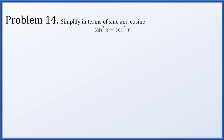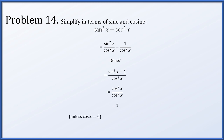In problem 14, we simplify tan²x − sec²x. Tangent is sin/cos and secant is 1/cos, so with a common denominator of cos², we get (sin²x − 1)/cos²x. By the Pythagorean identity, sin²x − 1 = −cos²x. We now have −cos²x/cos²x = −1. The restriction cos x ≠ 0 was already implicit in both tangent and secant in the original expression.